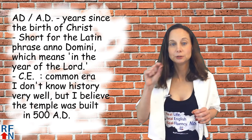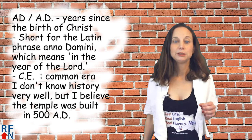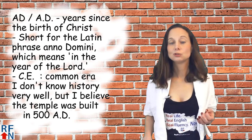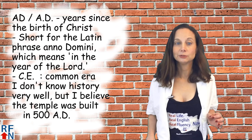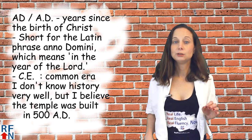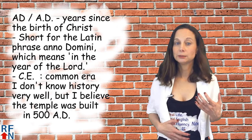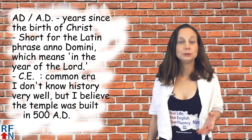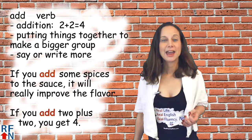'AD,' with or without a period after each letter, means years since the birth of Christ. It's short for a Latin phrase meaning 'in the year of the Lord.' 'CE,' on the other hand, means 'common era.' A sample sentence: 'I don't know history very well, but I believe the temple was built in 500 AD.'